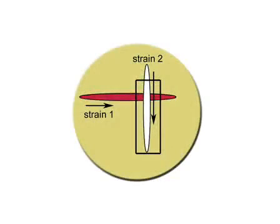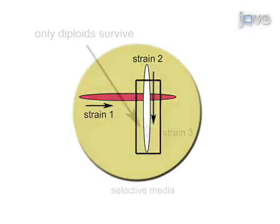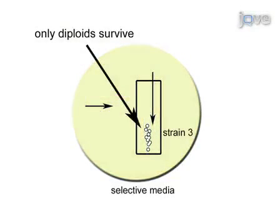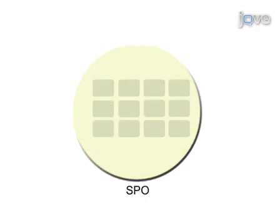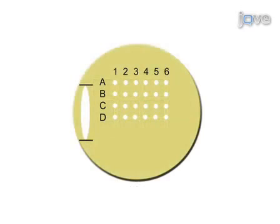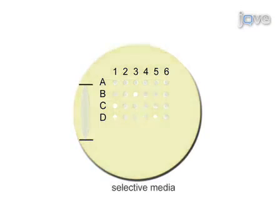This procedure begins with the mating of two genetically different haploid yeast cells. Diploids are selected by replica plating onto medium that permits growth of only the diploids. The diploids are then patched onto sporulation plates, or asci form. The asci are dissected with the haploids placed in a defined location on the plate. Once the resulting haploids have grown to a visible colony, the plate is replicated to selective medium to identify the genotype of the individual cells.